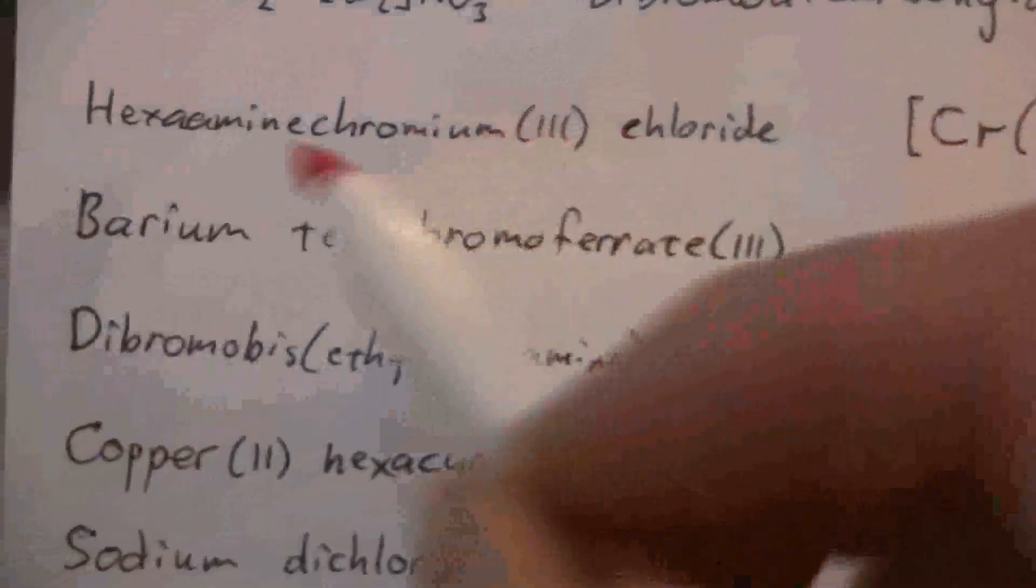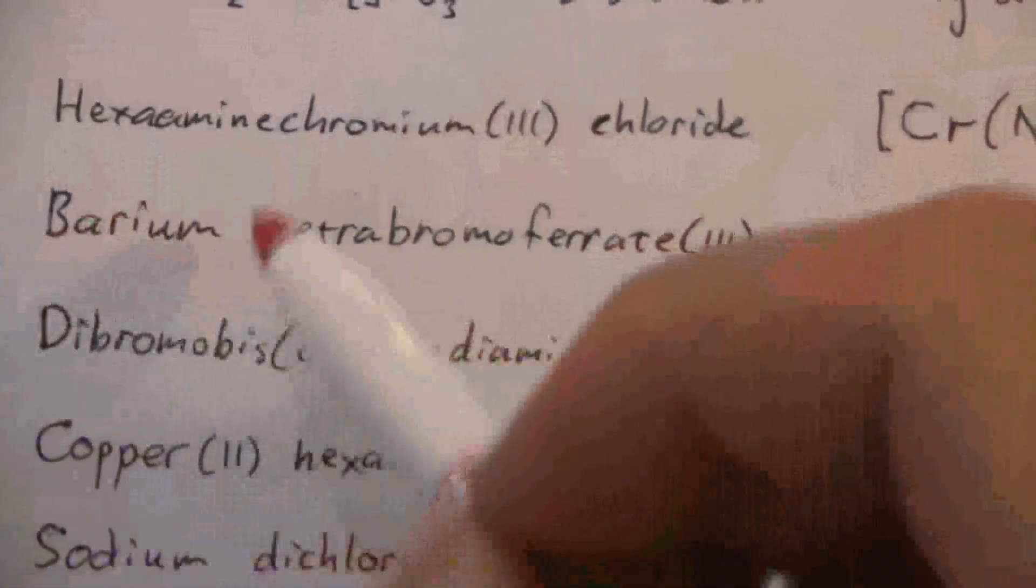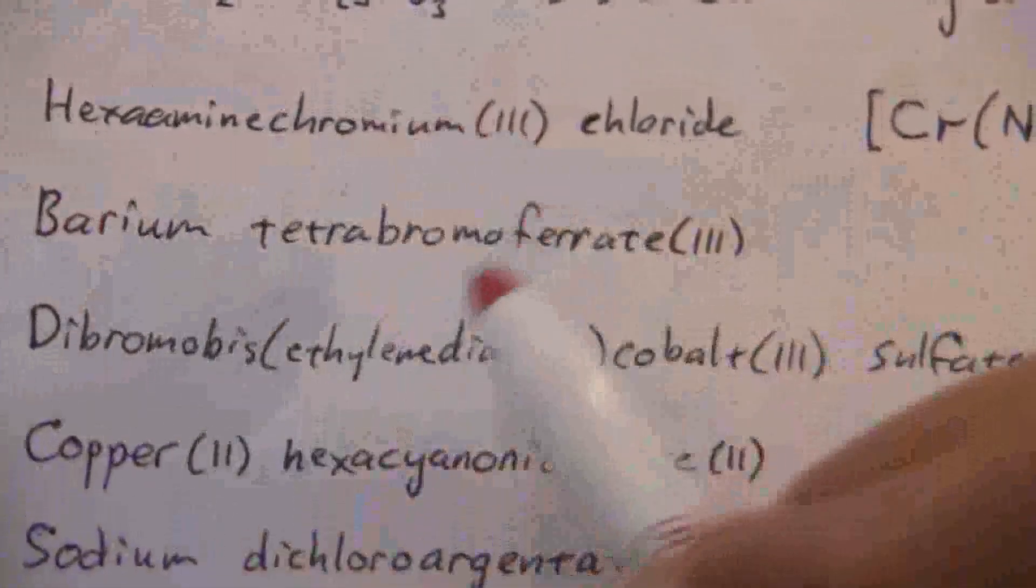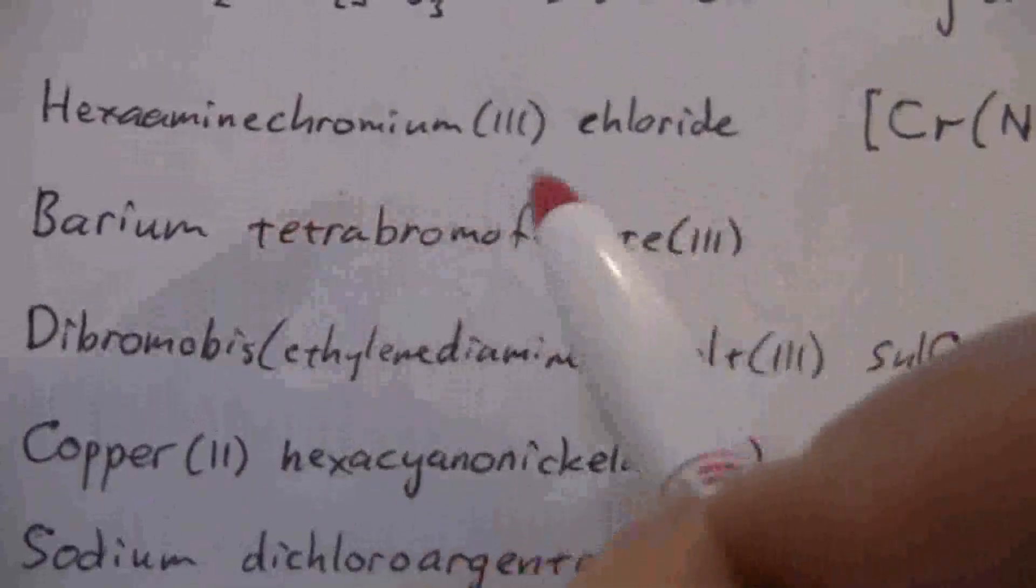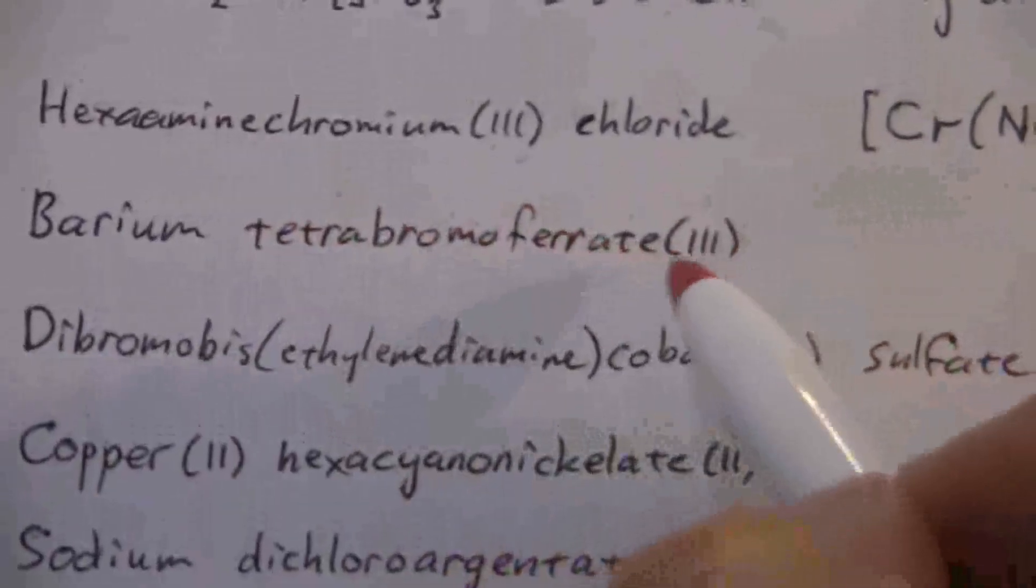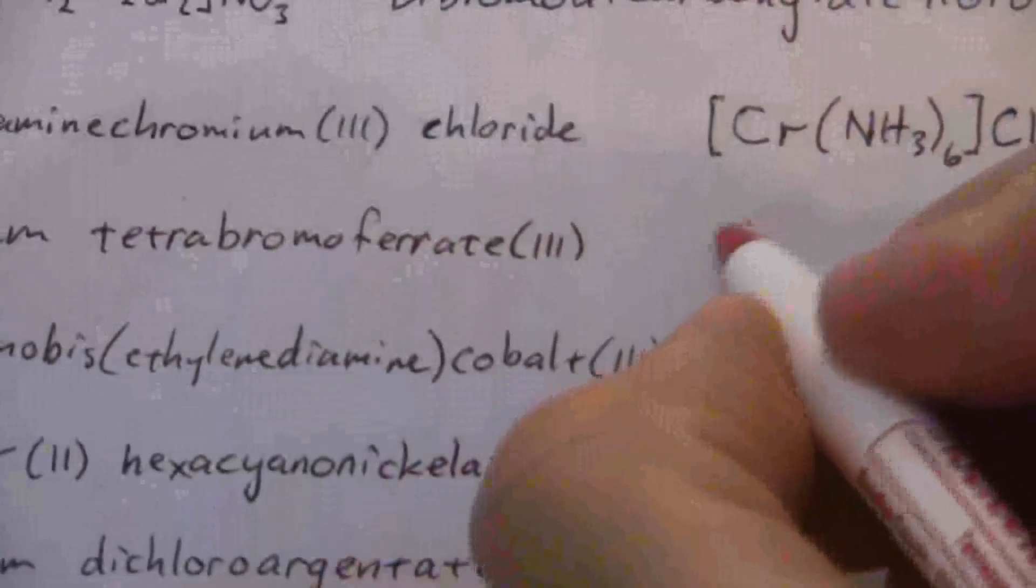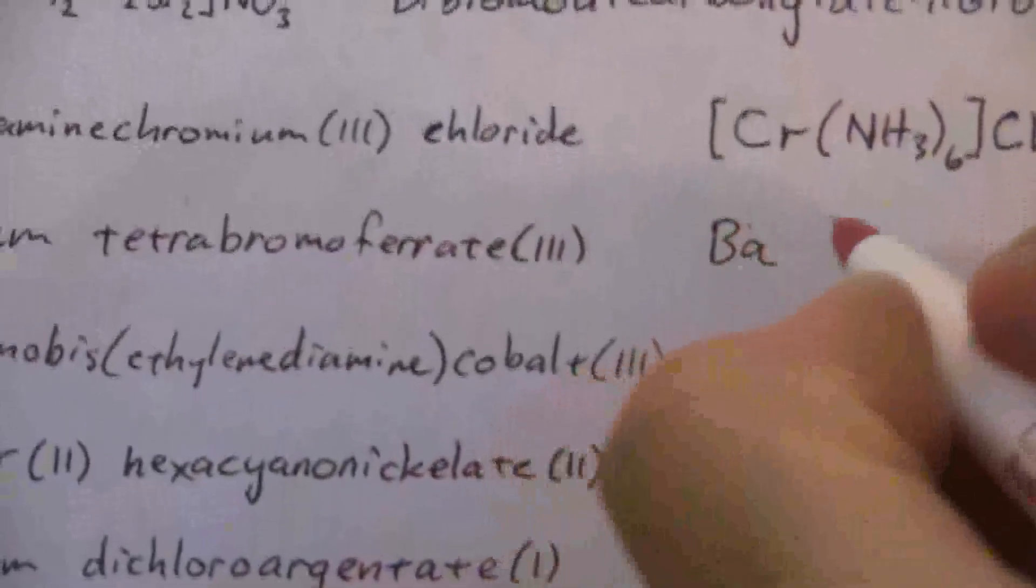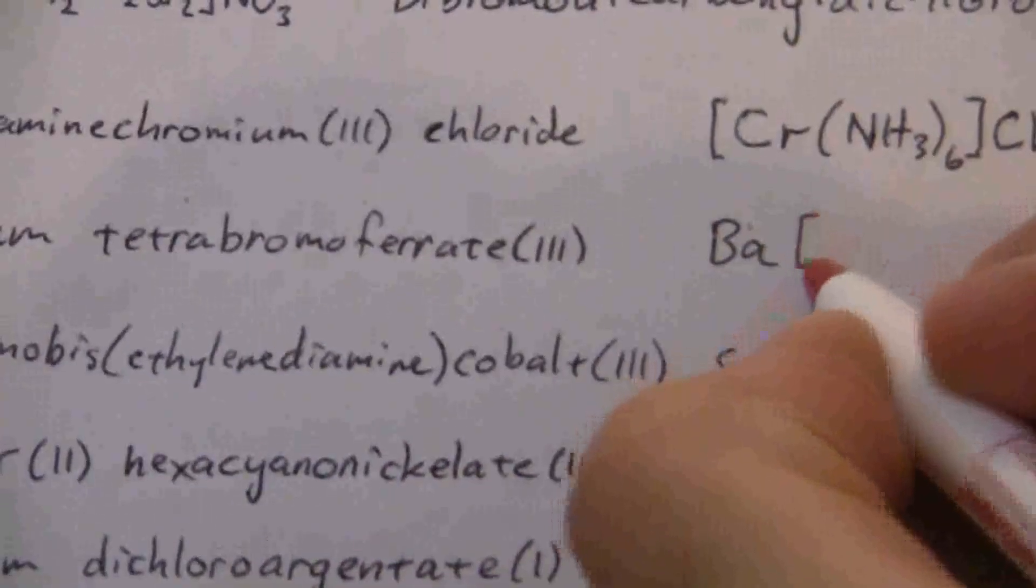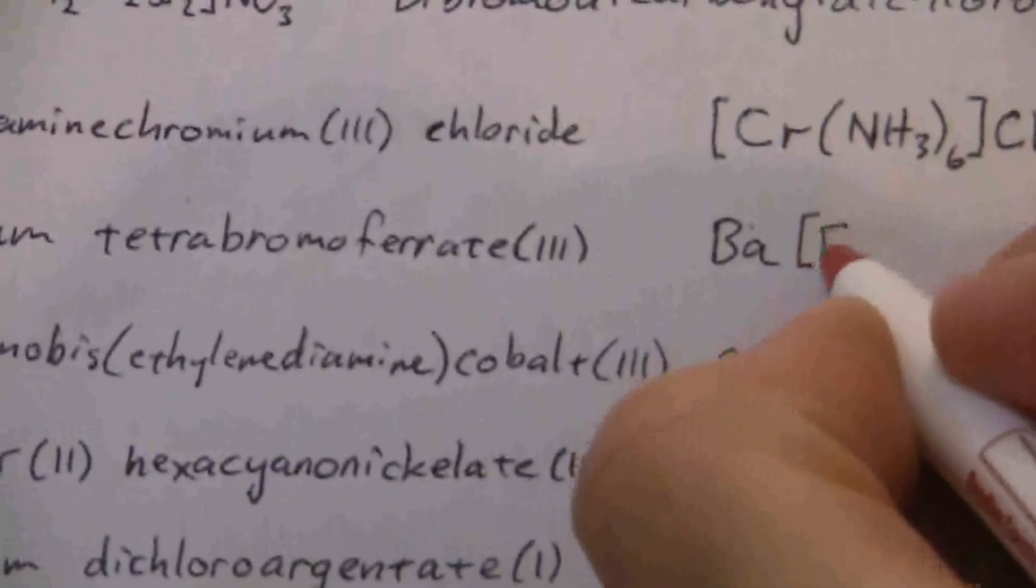Now here, cation is barium, positive two, and the anion is tetrabromo ferrate(III). So ferrate(III), first of all we're going to have barium and then the ferrate.